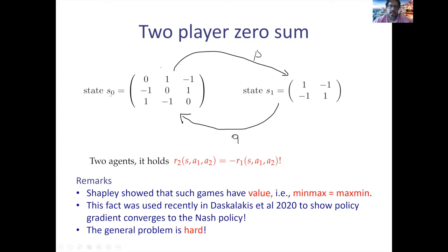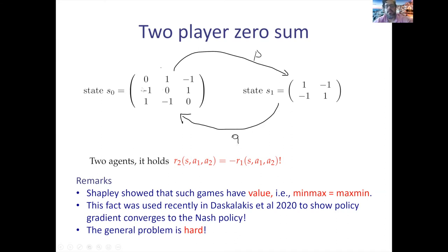There's some probability p to transition from state zero to state one and probability q to transition from state one to state zero. With probability 1−p you remain in state zero, and with 1−q in state one. Moreover, p and q are not fixed numbers — they depend on the actions of the two players. So the transition probabilities change with the policies.